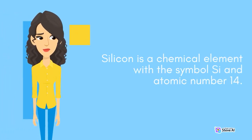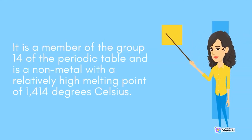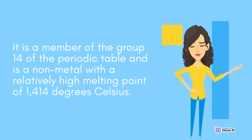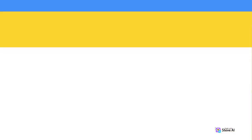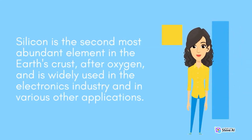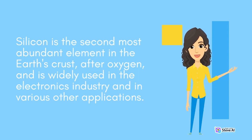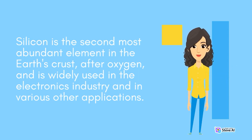Silicon is a chemical element with the symbol C and atomic number 14. It is a member of group 14 of the periodic table and is a nonmetal with a relatively high melting point of 1414 degrees Celsius. Silicon is the second most abundant element in the Earth's crust, after oxygen, and is widely used in the electronics industry and in various other applications.